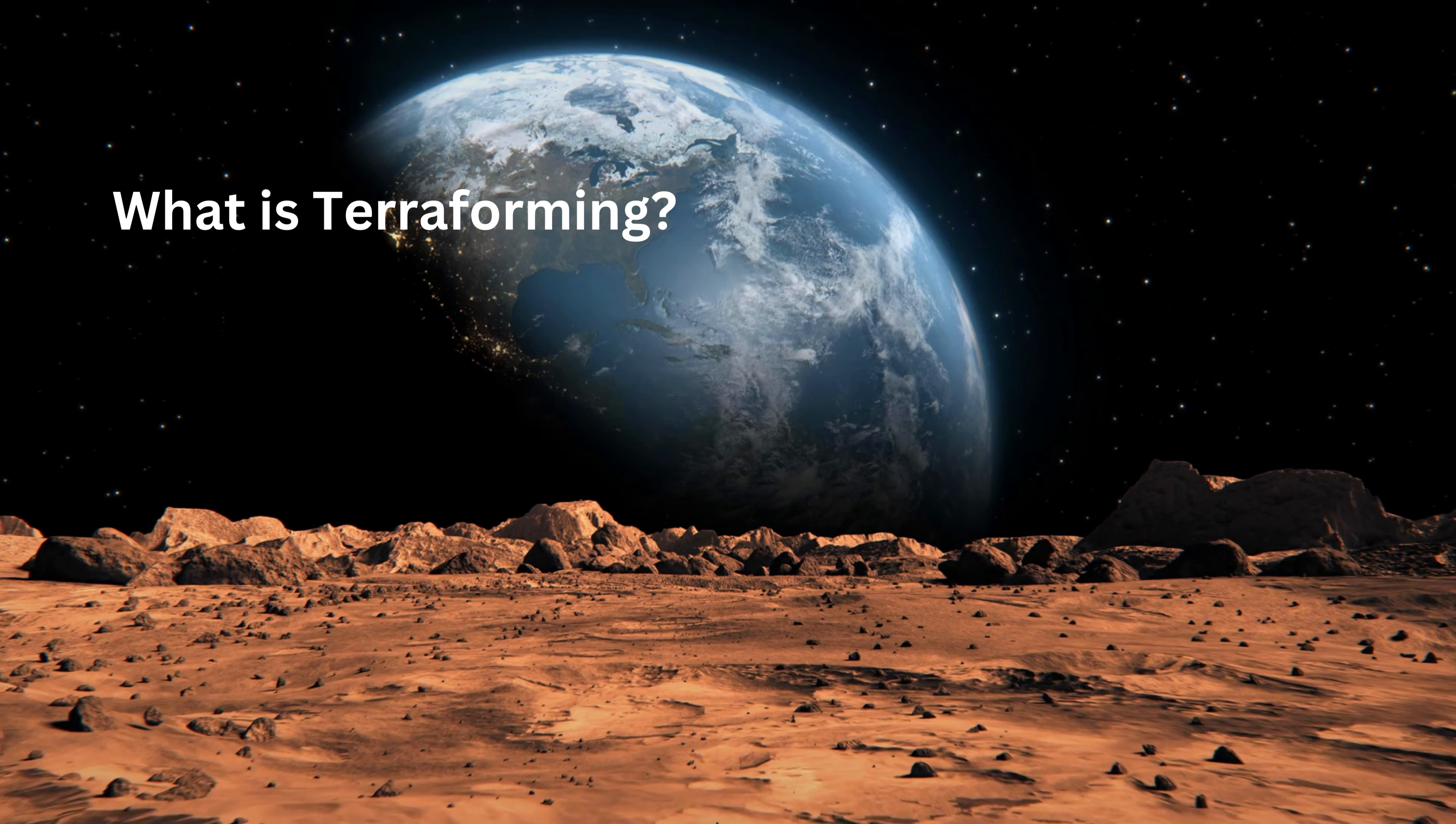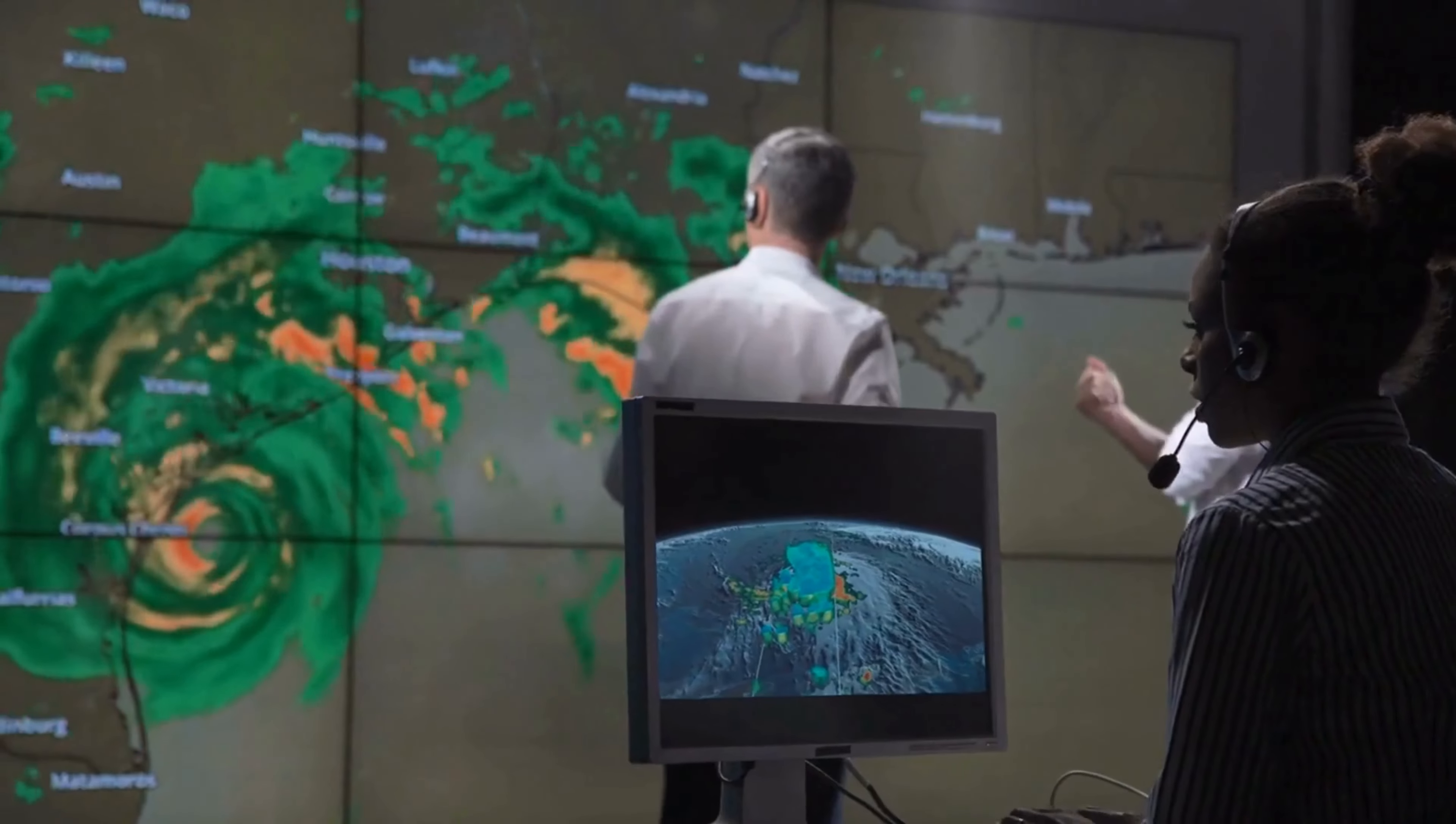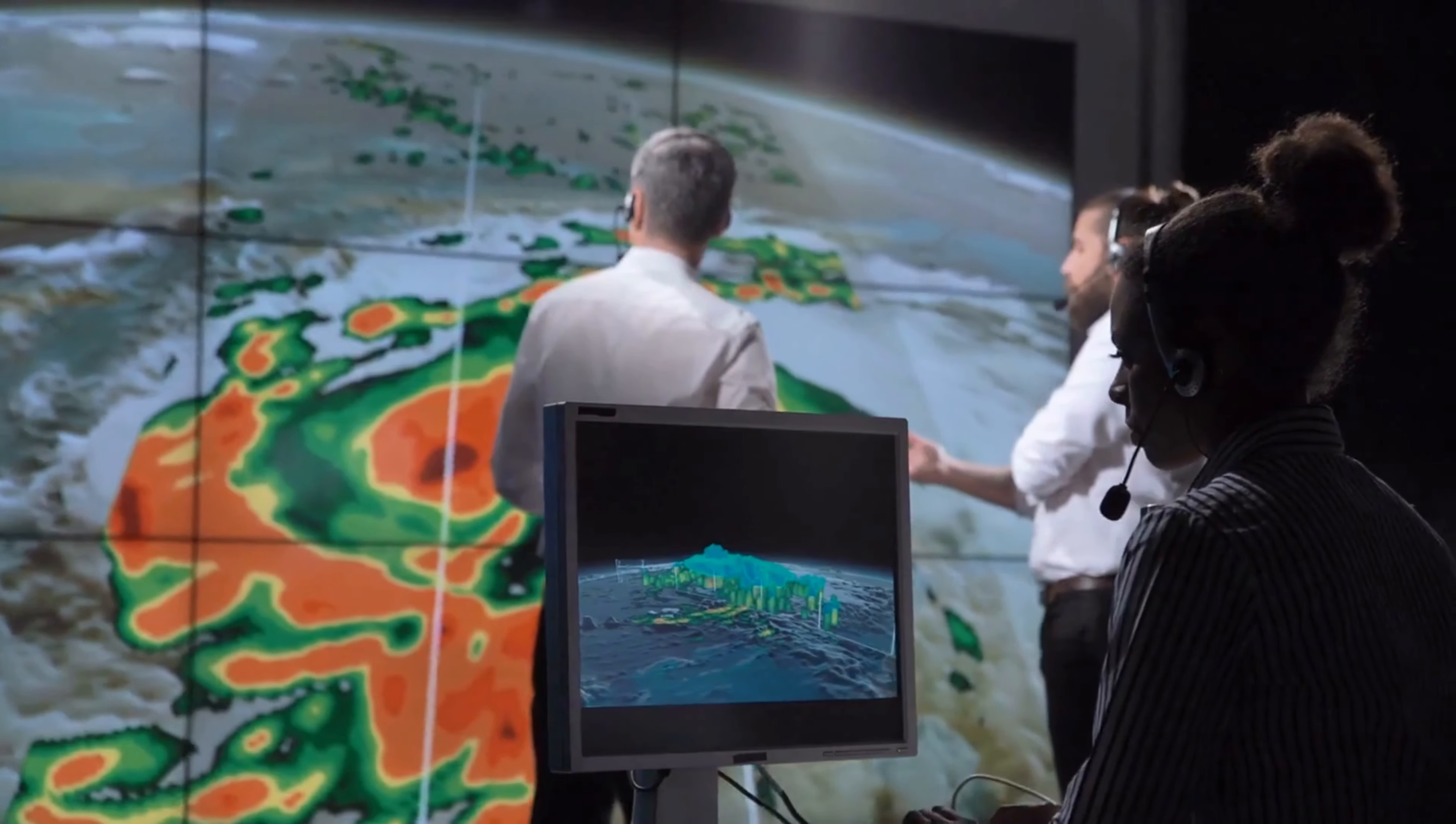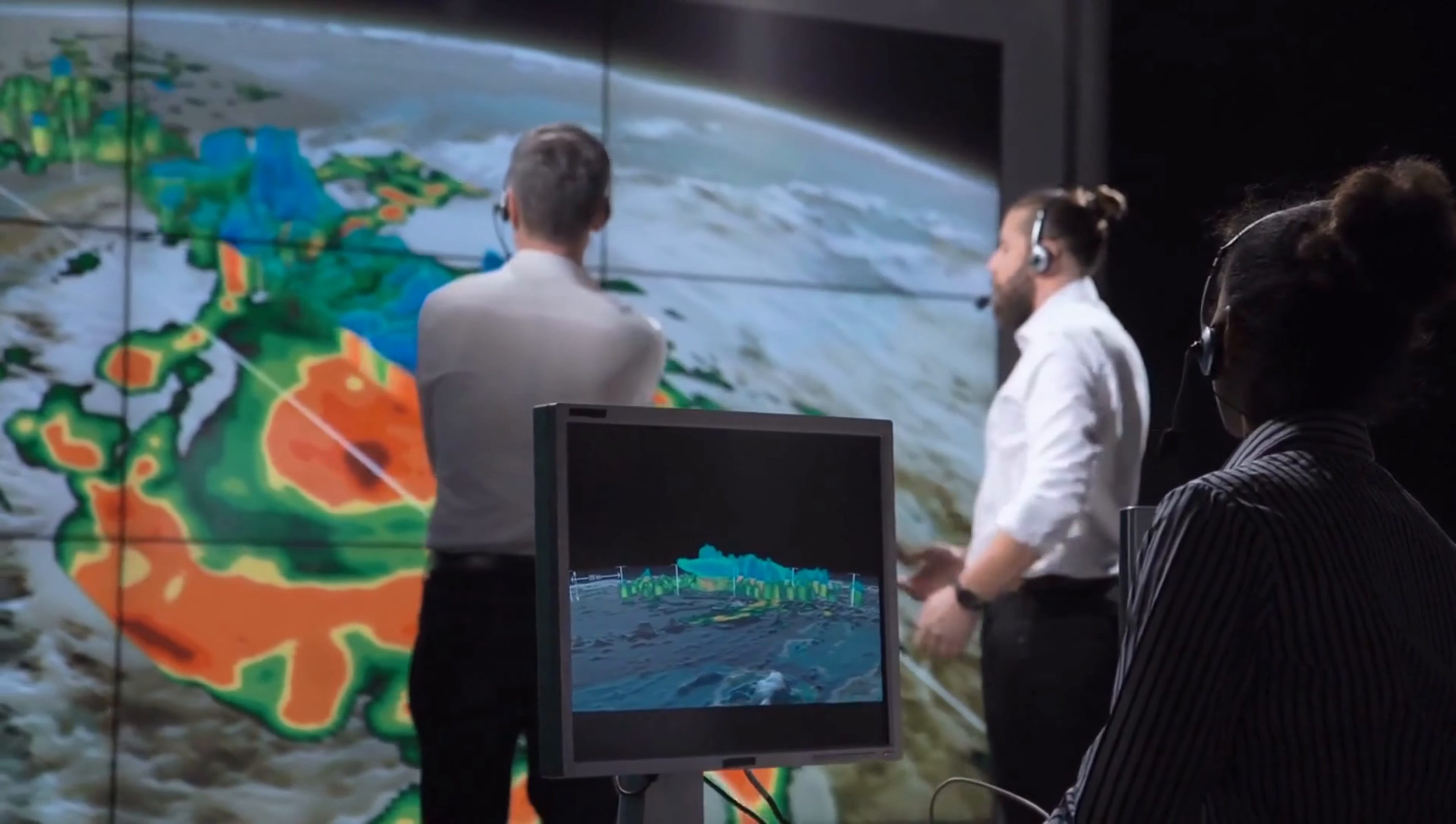What is terraforming? Terraforming is the process of modifying a planet, moon, or other body to a more habitable atmosphere, temperature, or ecology. Jack Williamson used the term in a science fiction novel, City Shock, 1940, but the concept is older than that.